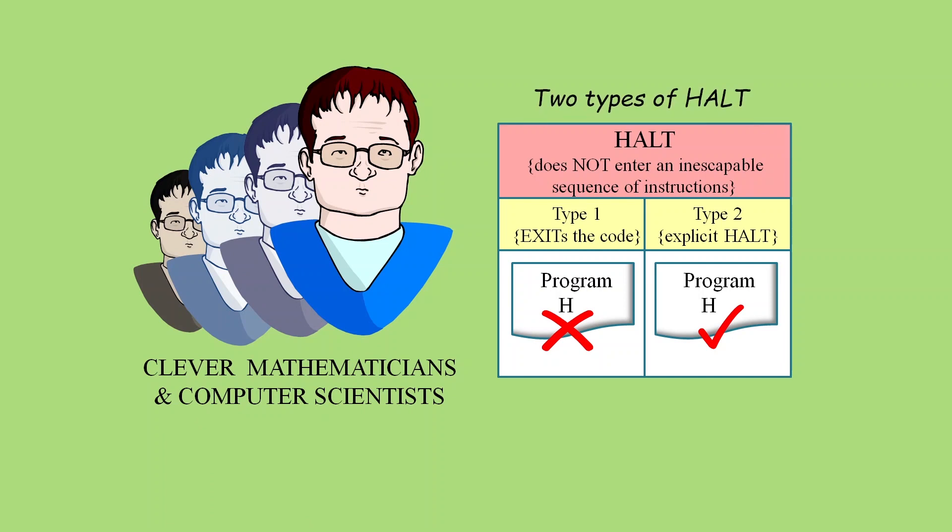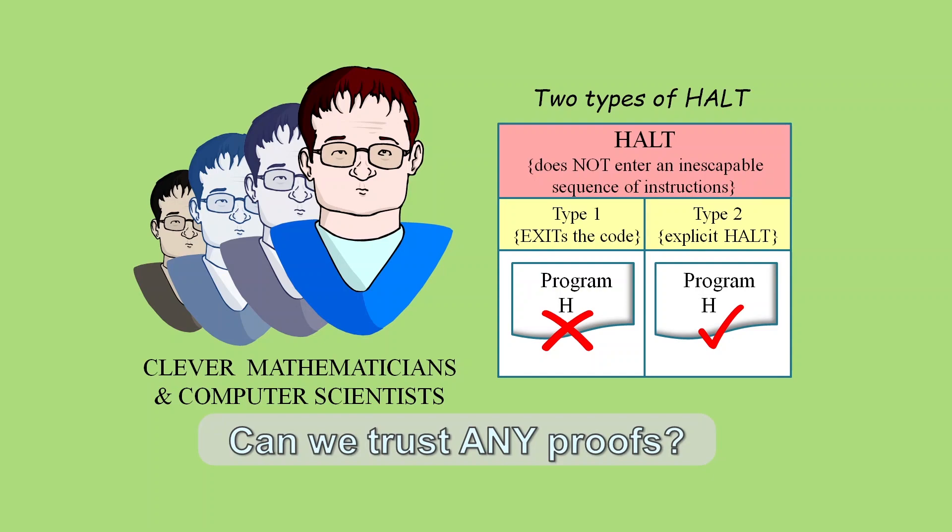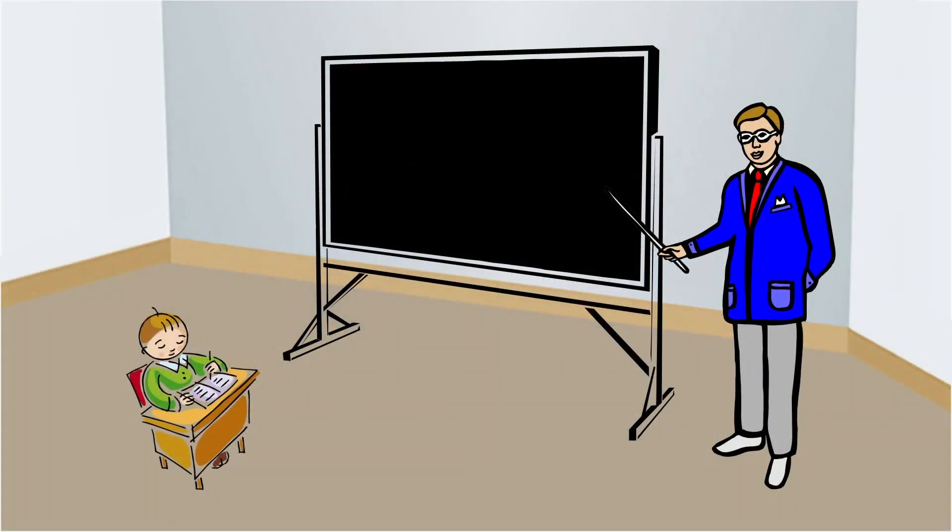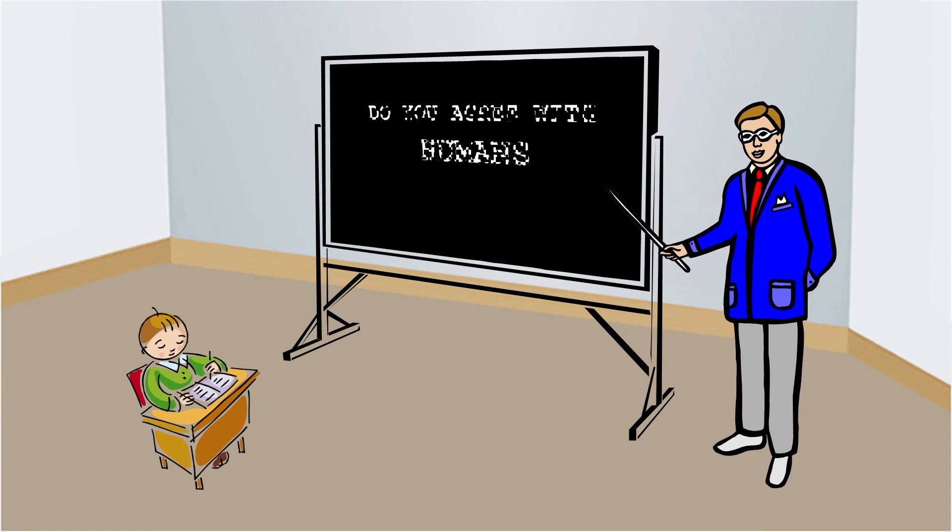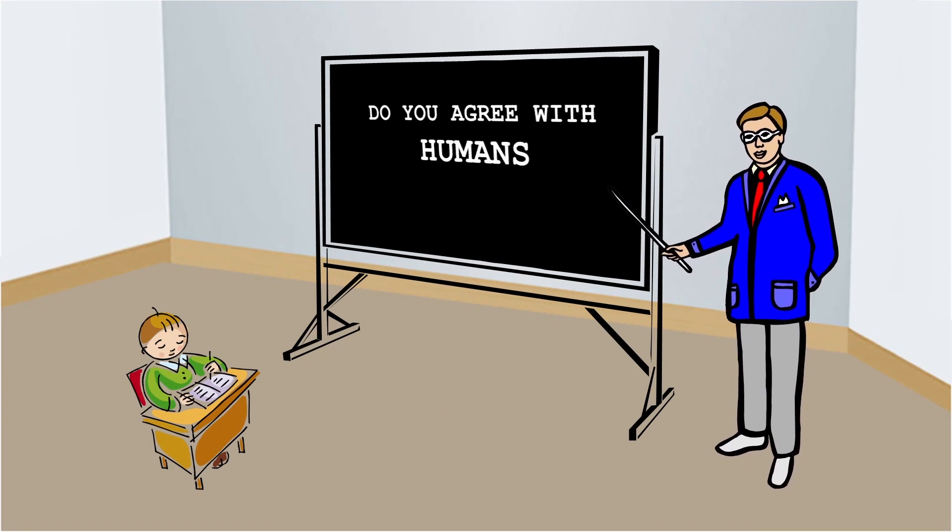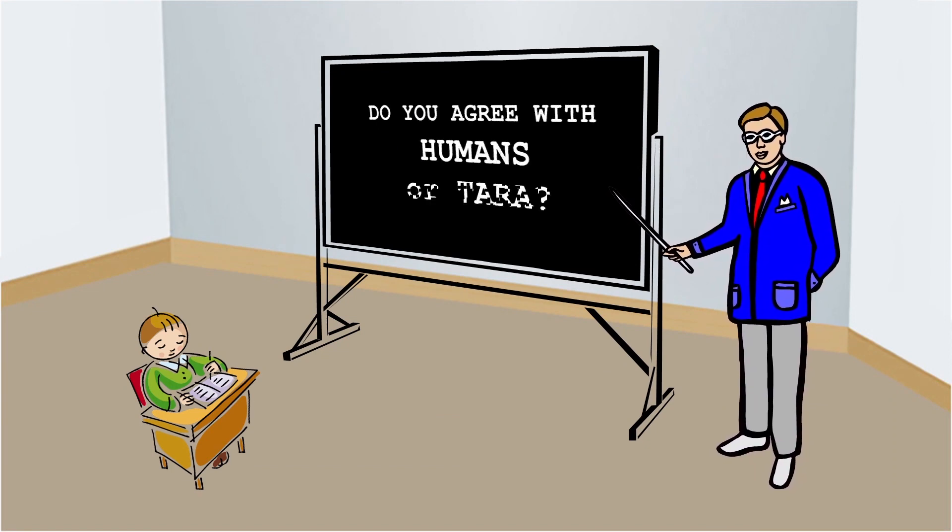And if a simple proof like this can be wrong, then we can't really have any confidence in the validity of any mathematical proof. And so, as a human yourself, do you agree with your fellow humans? Or do you agree with Tara, the alien robot? The final decision is yours.